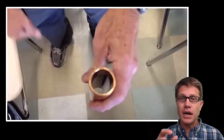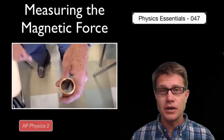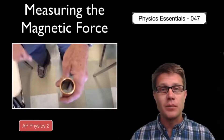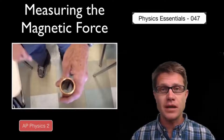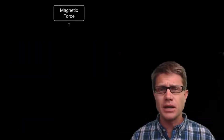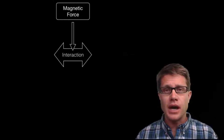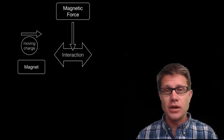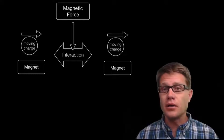As the magnet falls through the copper pipe it is inducing a current in the copper wire. That copper wire is then producing a magnetic force which is slowing the descent of the magnet. It seems magical but it is simply a magnetic force, which always occurs if we have an electric charge or a magnet interacting with another electric charge or another magnet.